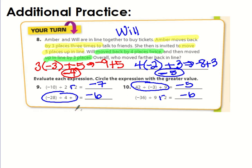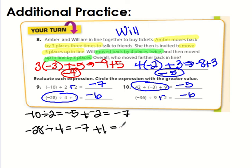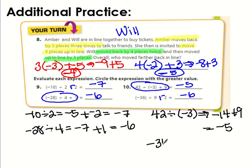I feel like I should have written these down here. So I'll do a quick recap. Negative 10 divided by 2, negative 5 plus negative 2, negative 7. And then negative 28 divided by 4, negative 7 plus 1, negative 6. 42 divided by negative 3 is negative 14 plus 9, negative 5. And negative 36 divided by 9 equals negative 4. And then I went plus negative 2, got me negative 6.